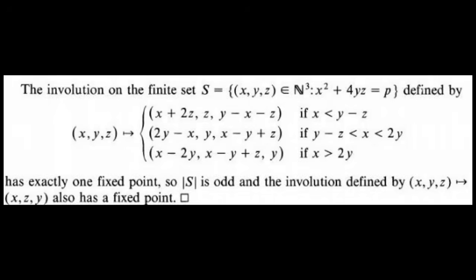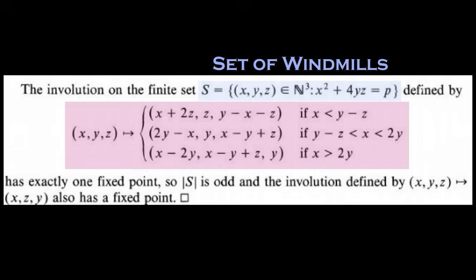Let's end this video by going back to the one sentence proof just to make sure it makes sense. We showed that the Zagier map is an involution and that it has exactly one fixed point, that is, when x equals y. Then, since it has one fixed point, the number of windmills has to be odd. Therefore, when we consider the flip map, it has to have at least one fixed point, which means that there exists a solution to Fermat's two squares theorem.